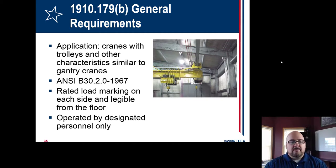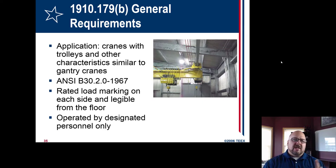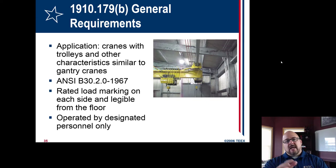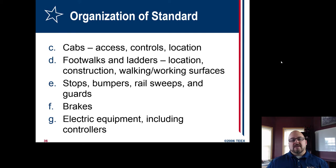Cranes are covered by ANSI B30.2. They need to have their load ratings on them and they need to be tested. No load should ever be lifted above another person's head. Just like with forklifts, I've seen more and more overhead and gantry cranes having a blue spotlight to indicate where the crane is moving to, which helps people be aware of where it's going. The standard also talks about the cabs, controls, and where they're located. Sometimes there's a person up in a cab moving with the crane itself.